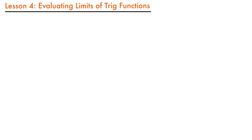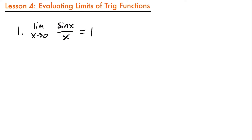We'll just get right to it. There are two special trig limits that you need to know that are going to be very helpful in evaluating limits with trig functions in them. The first one is: the limit as x approaches 0 of sine x over x is equal to 1.